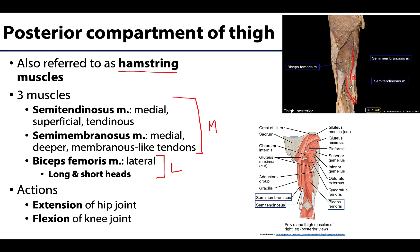The semimembranosis is named because of the more flattened membranous-looking tendon — all that white right here is the tendon of the semimembranosis, which is a bit more flattened. Both the semitendinosus and the semimembranosis are more medially placed.